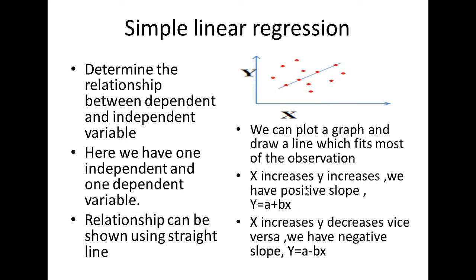For example, consider a house price problem. If we represent the square feet on the x-axis and the cost on the y-axis, whenever the square feet increases, the cost also increases. This gives a positive slope.